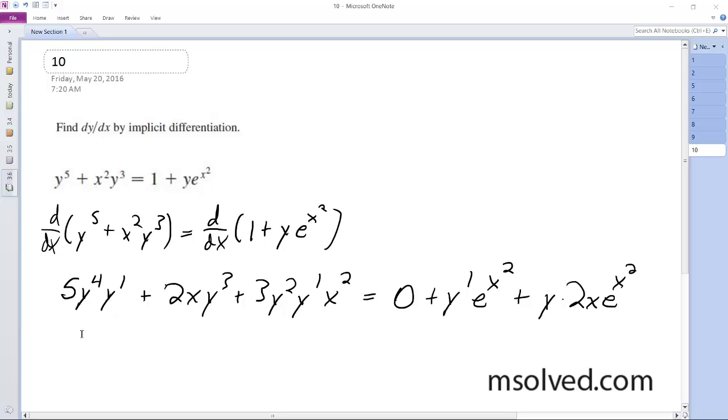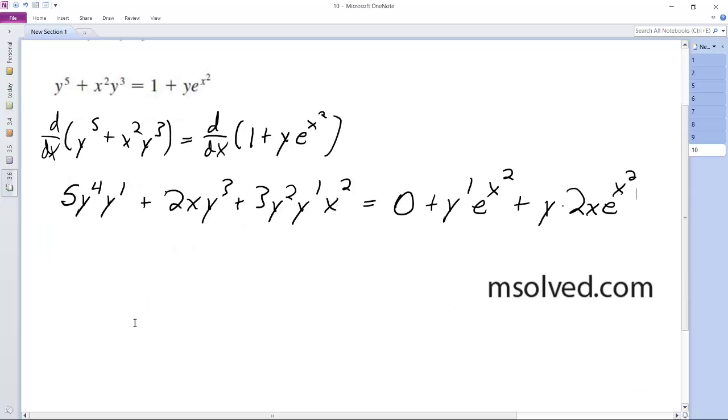I want to get the y primes on the side by themselves. So I'm going to have y prime and then 5y to the fourth minus e raised to the x squared